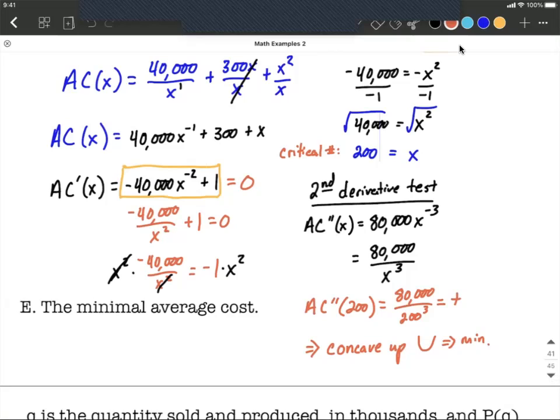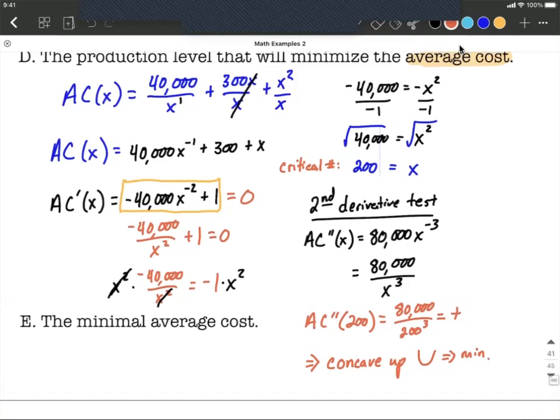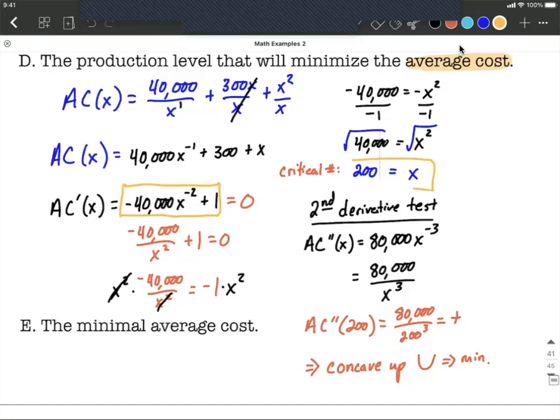All right, the very last thing we want to know is what's the minimal average cost. So to find this we're going to use the critical number we found, 200. We're going to go back up to the average cost formula and we're going to plug that in.